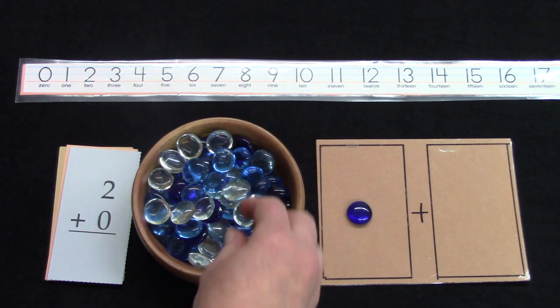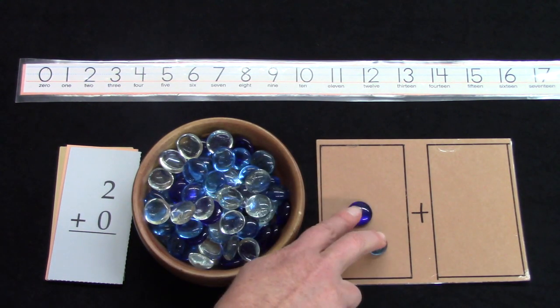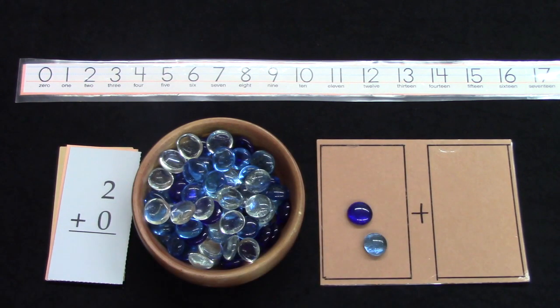If we had two plus zero, we would have to add another gem on this side. So we have two plus nothing, zero. And two plus zero is two.